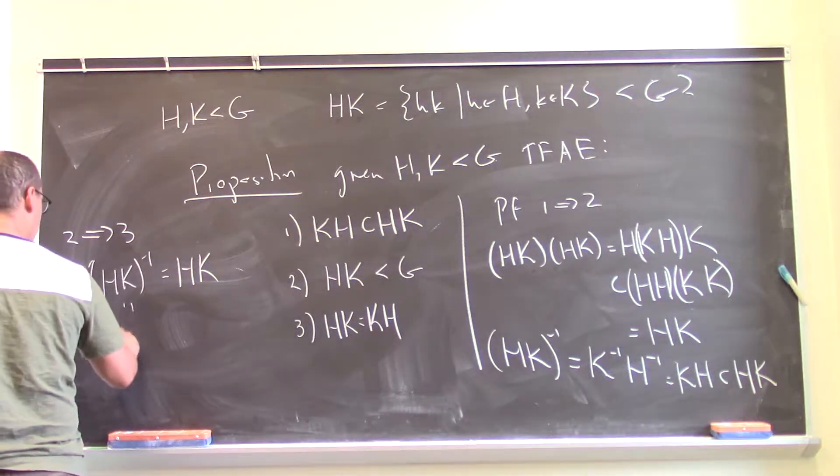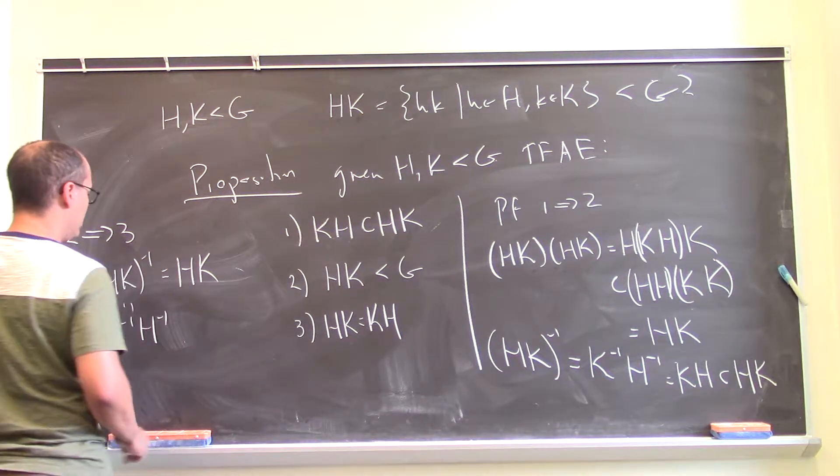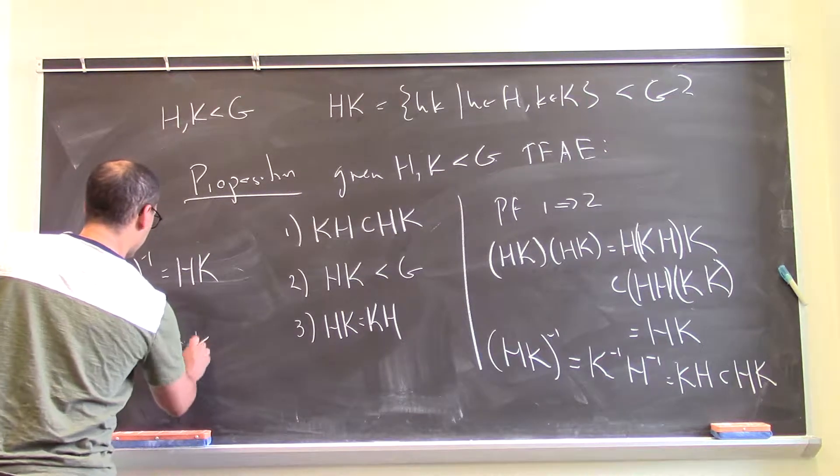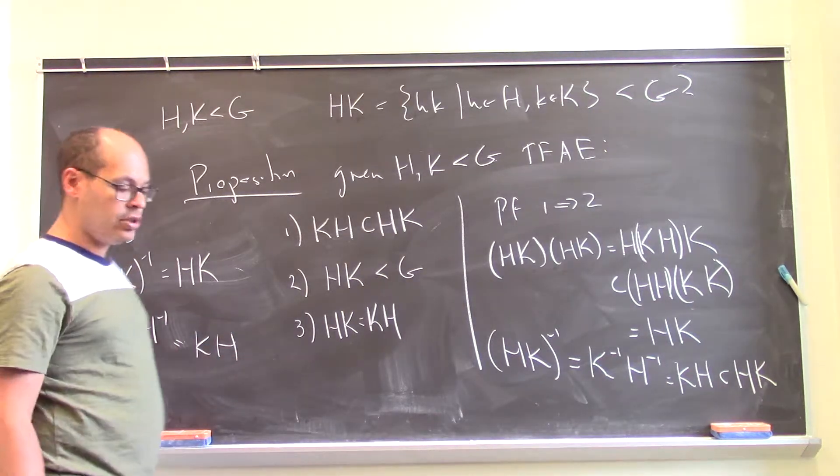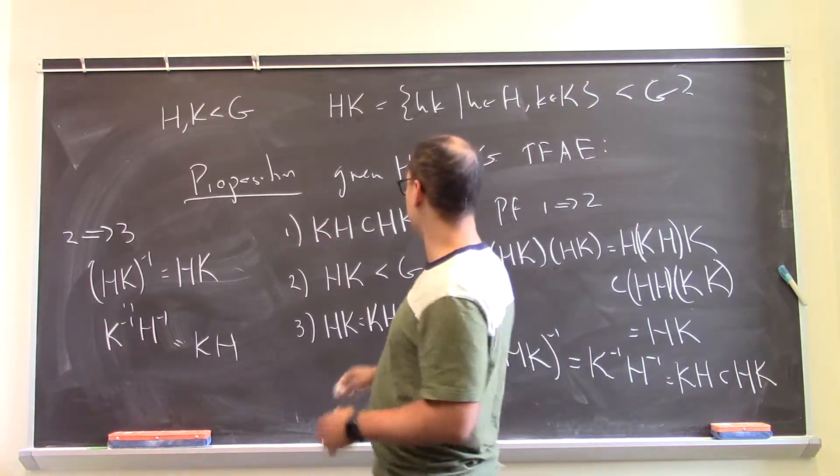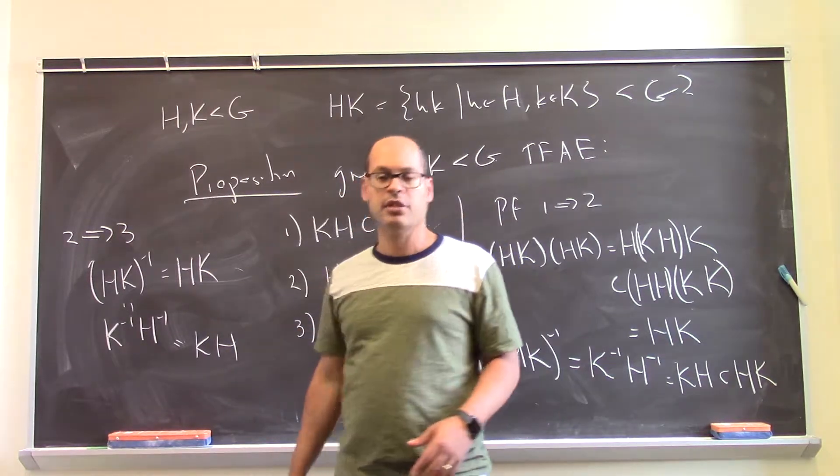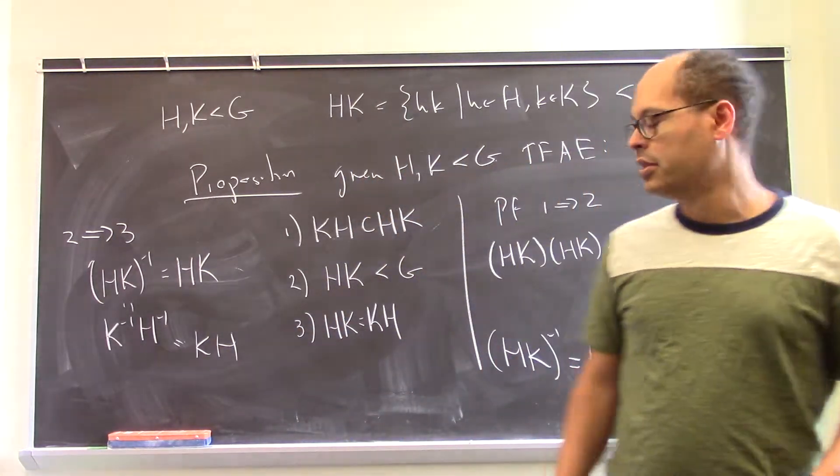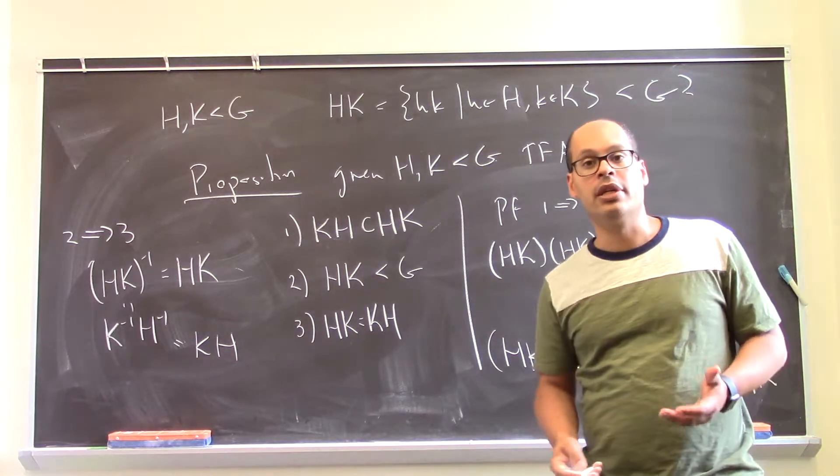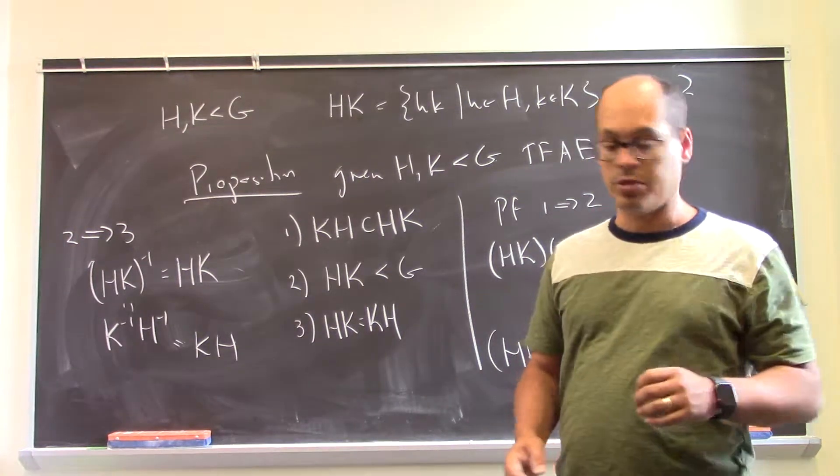But now, just as before, I can rewrite this as K inverse H inverse. And K inverse is K, and H inverse is H. So that's KH. And so if you're closed under, if HK is closed under inversion, because it's a subgroup, then you have to have 3. HK is KH. And of course, 3 implies 1. And so this gives us a nice criteria to think about products of subgroups being groups.